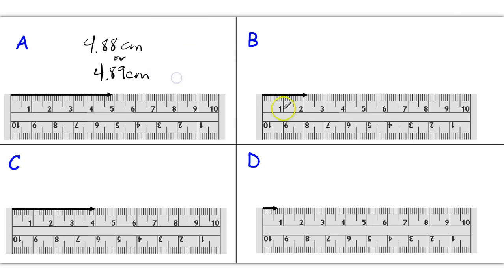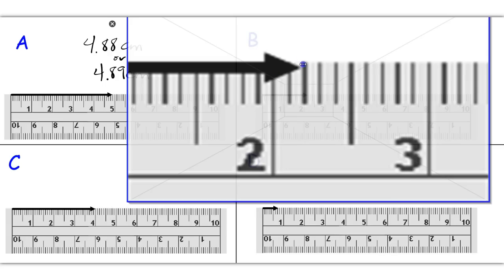So letter B, this one is not quite on the 2.2, so we call this 2.1 and maybe 2.19.